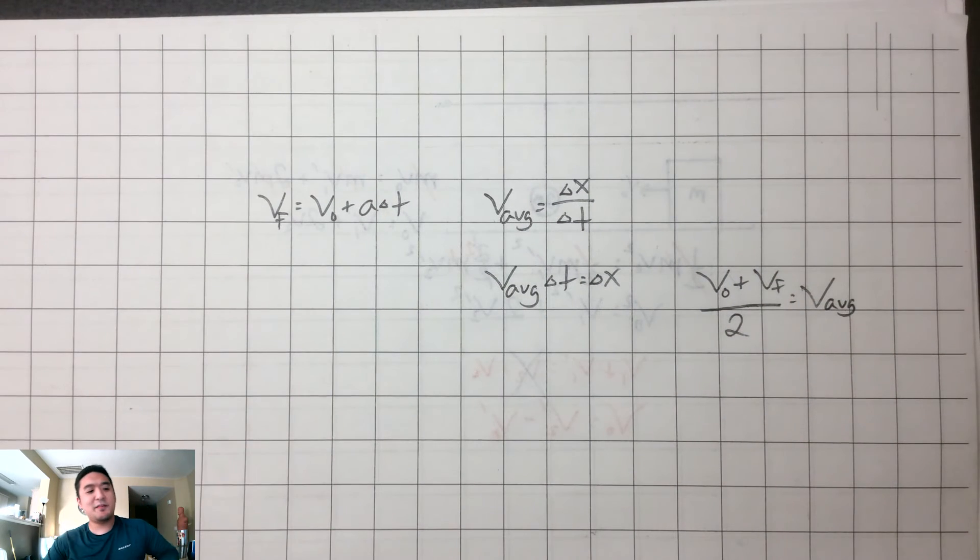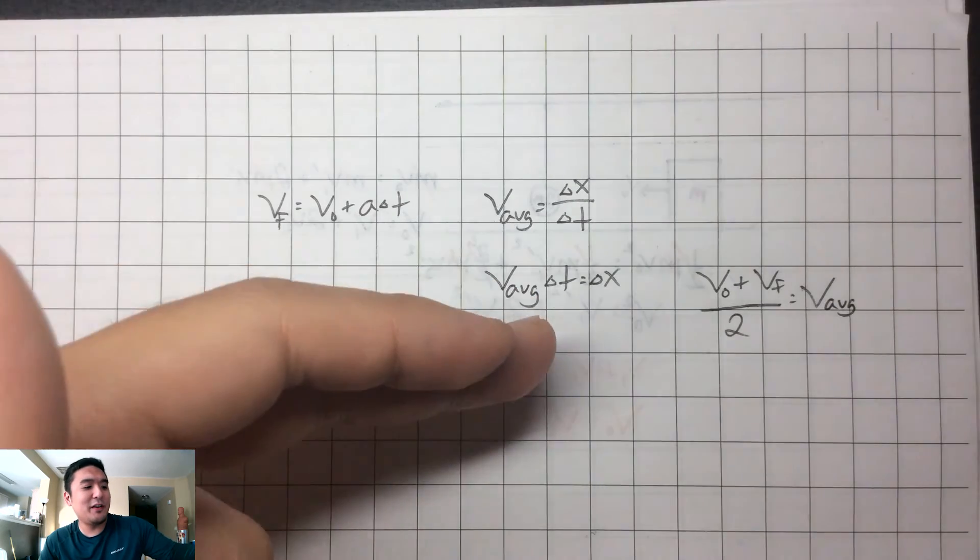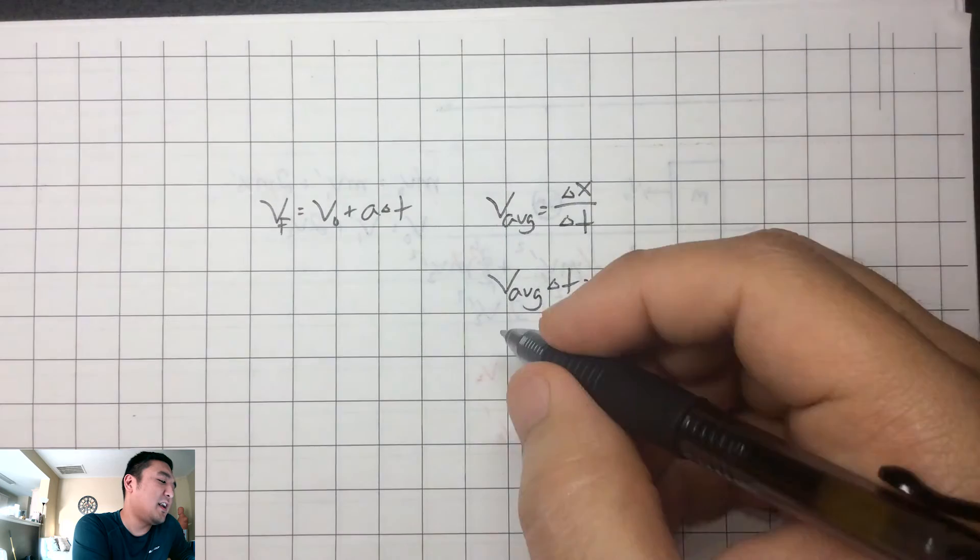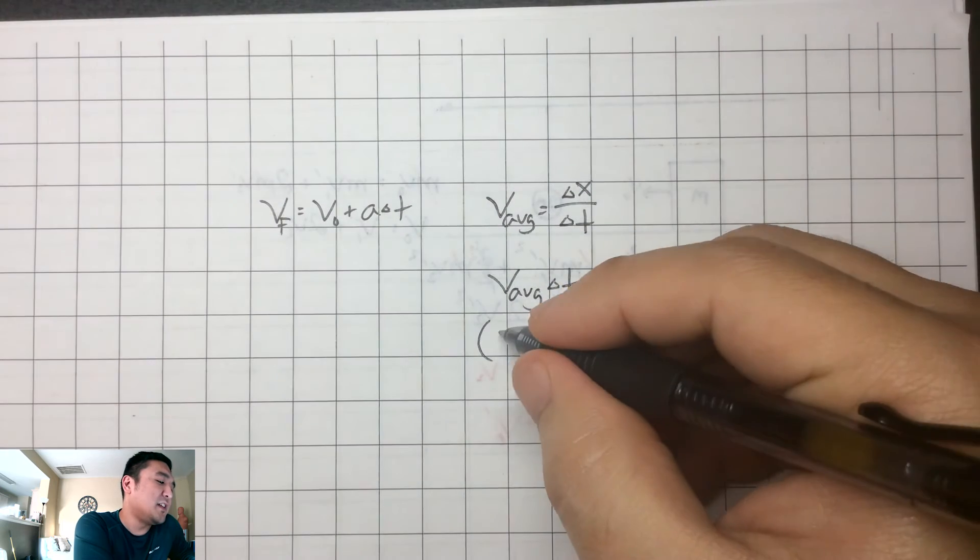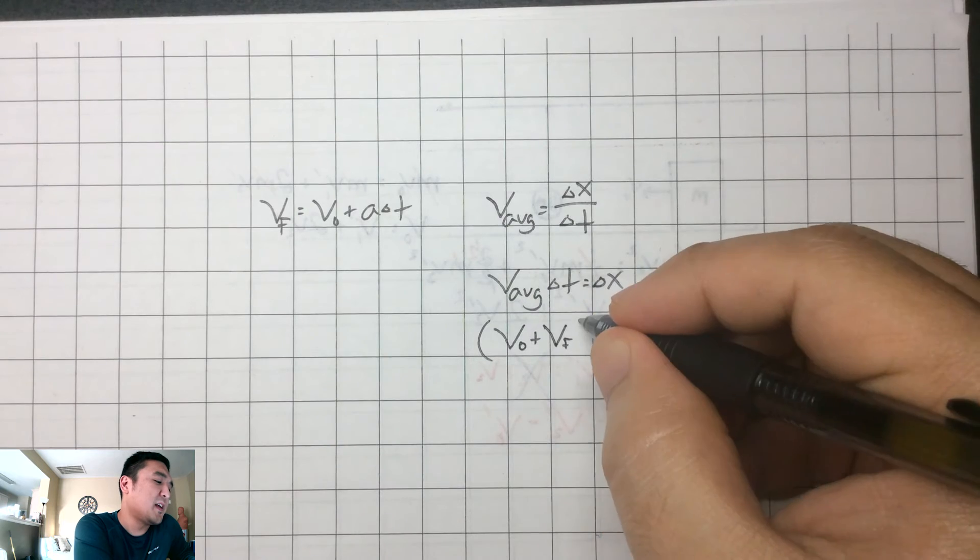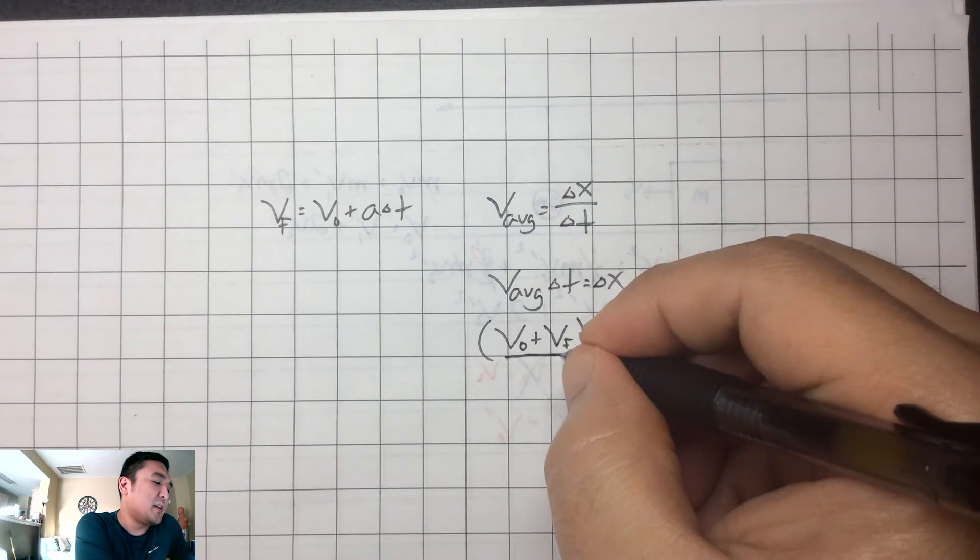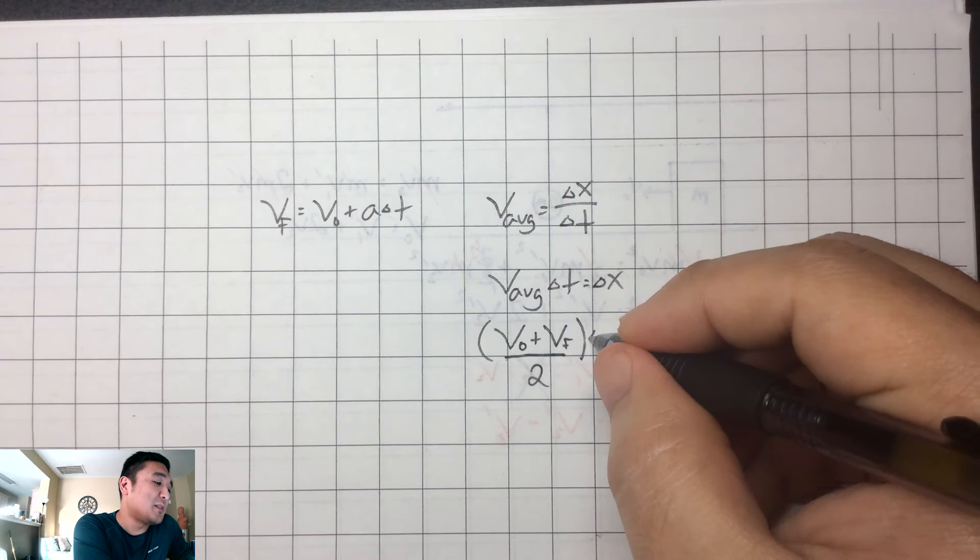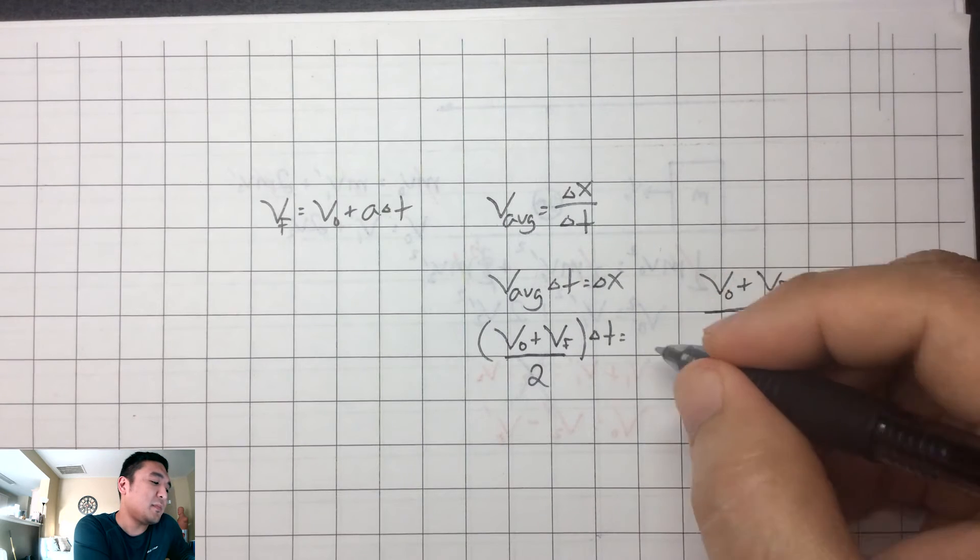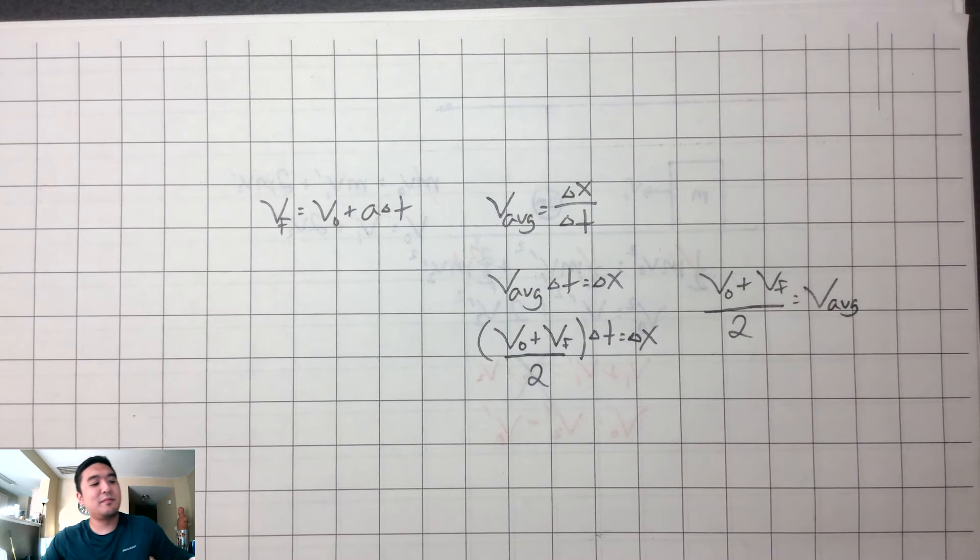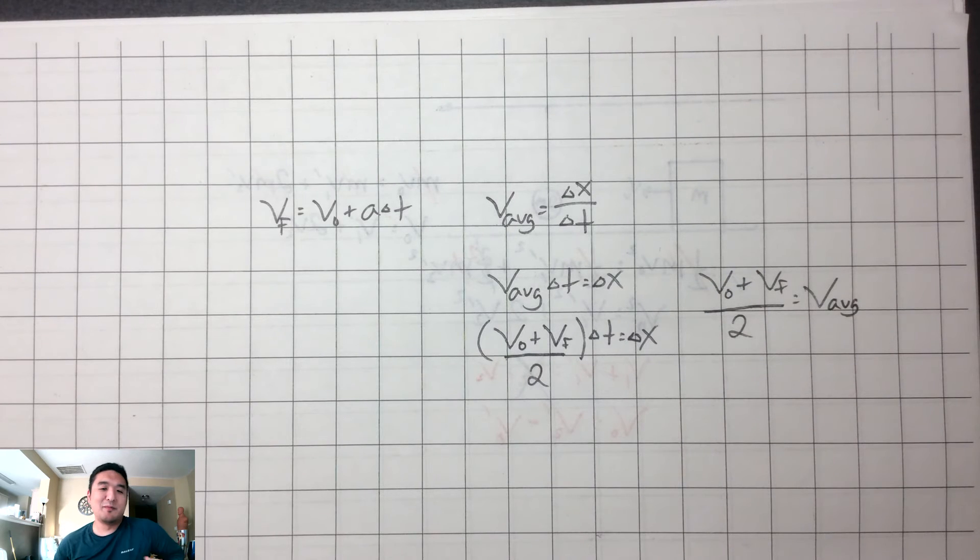So we're just going to take that, and we're going to plug it in right there. So I've got average velocity is initial velocity plus final velocity, and that's divided by two on the bottom, and that's multiplied by time. That is equal to a change of position. And you're like, all right, so great. What good is that?